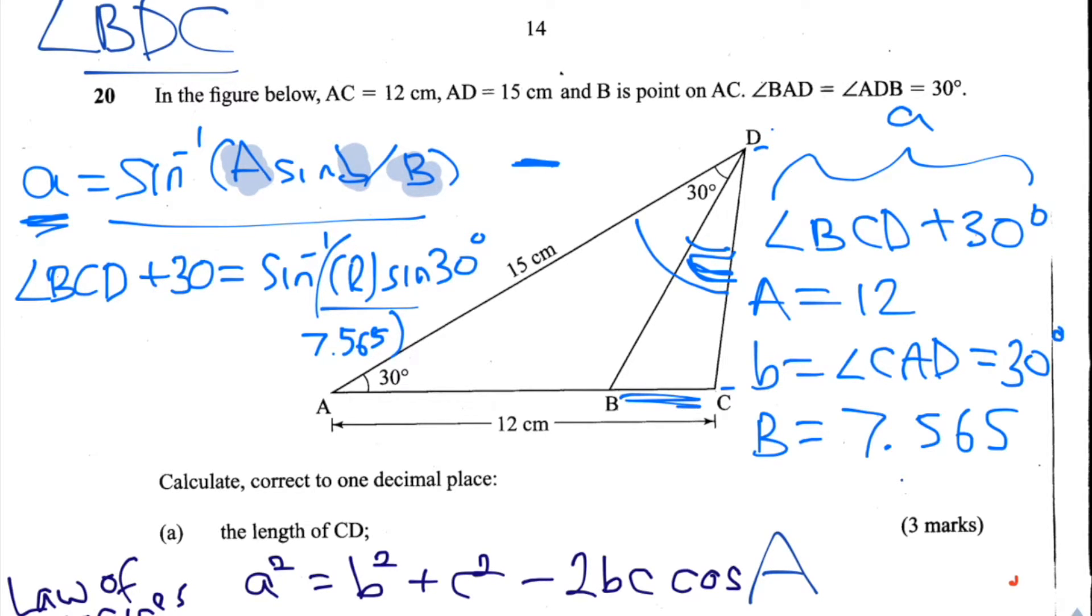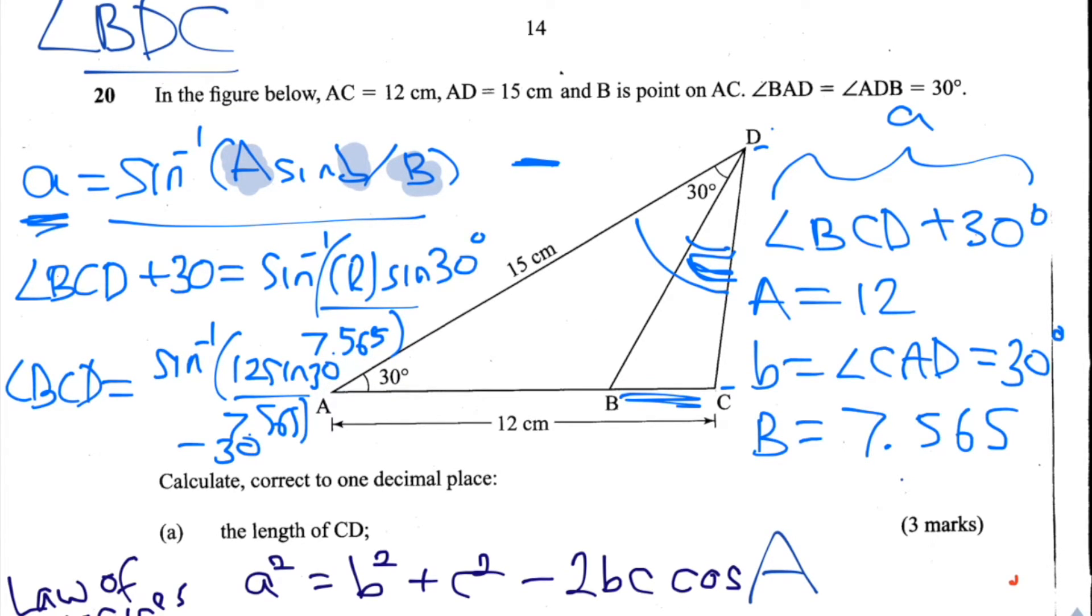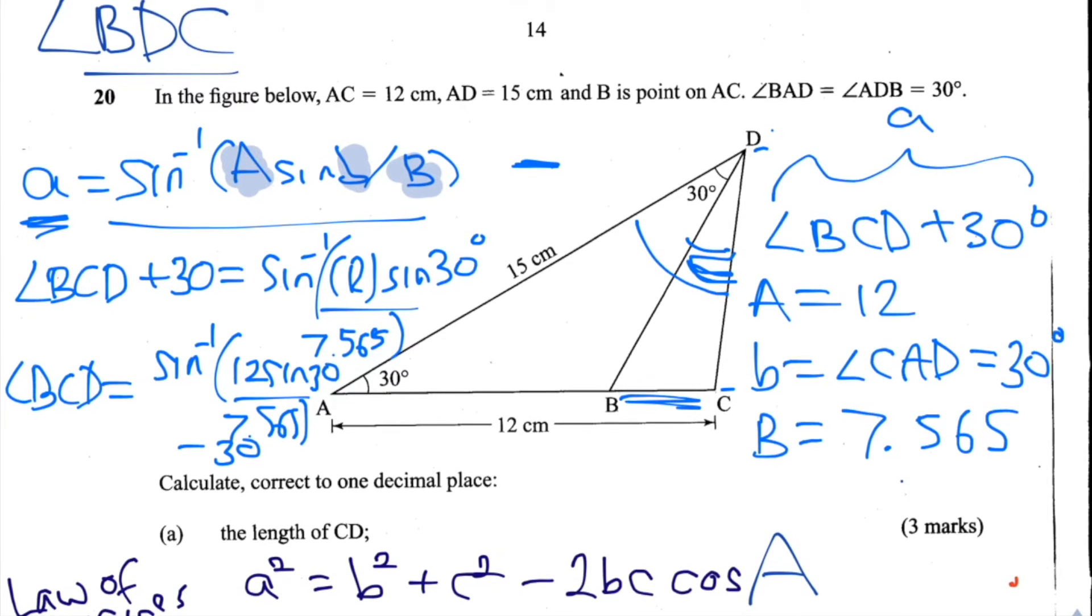And what happens when we subtract 30 degrees from both sides and calculate the value of BCD? We get BCD is equal to 22.5 correct to one decimal place, so 22.5 degrees.